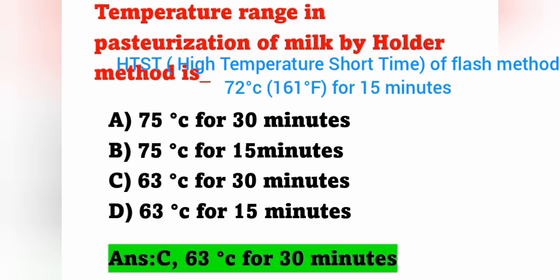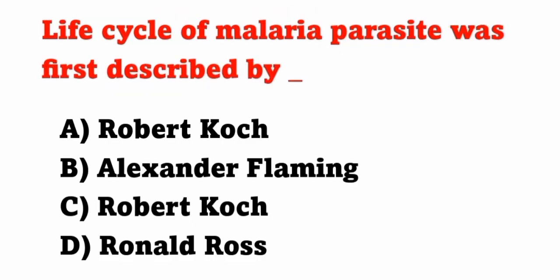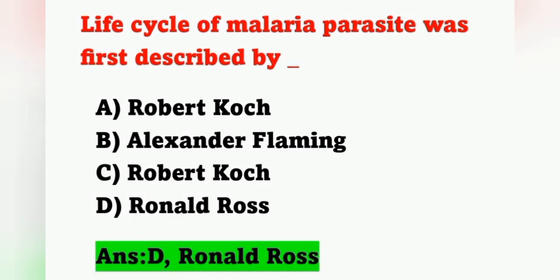Next question: the life cycle of the malaria parasite was first described by — option A: Robert Koch, option B: Alexander Fleming, option C: Robert Koch, option D: Ronald Ross. The life cycle of the malaria parasite was first described by Ronald Ross. Option D is the correct answer.